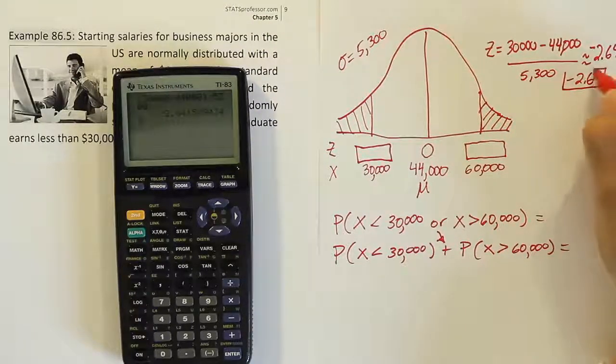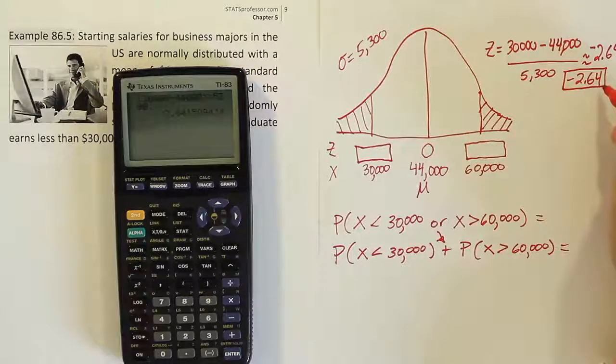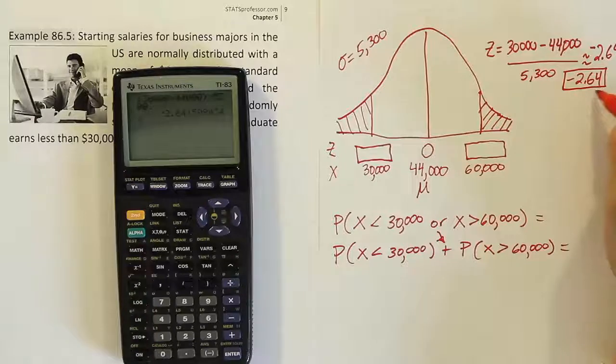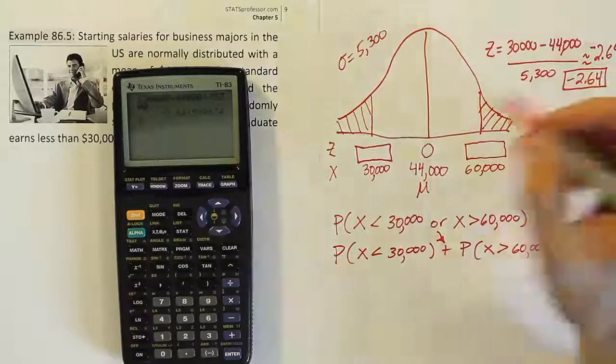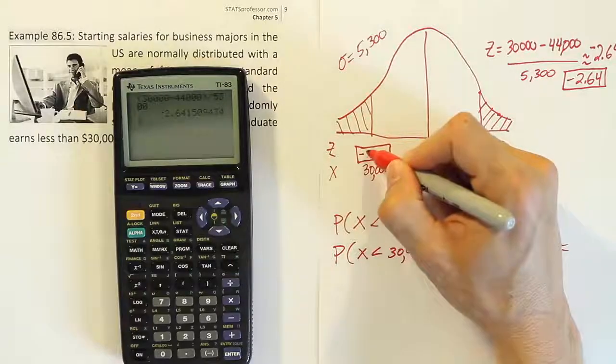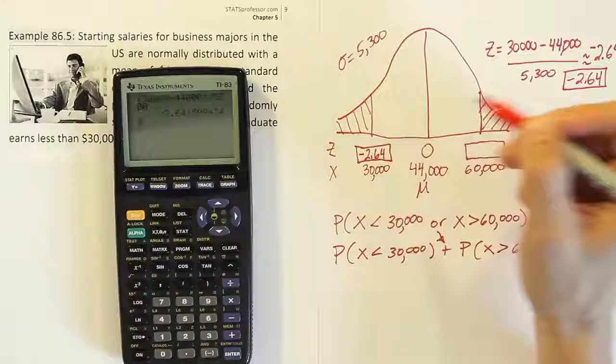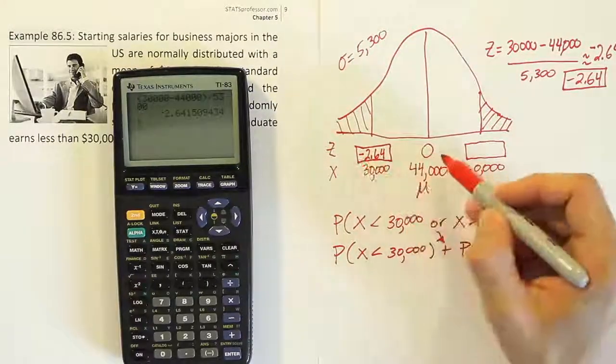When I'm done, I get minus 2.64. We want to make sure that we round off to two decimal places, because that's how our table works. It only has two decimal places after the decimal point. So this means this is minus 2.64. And it should be negative because it's to the left, correct?